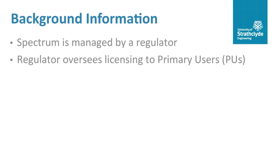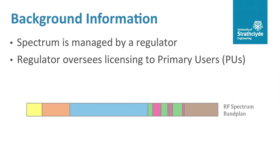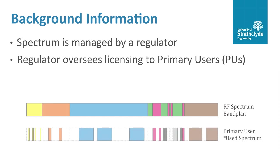In every country the radio spectrum is managed by a spectrum regulator who oversees the allocation and licensing of frequency channels to primary users such as cell operators and TV broadcasters. Traditional allocation policies commonly see large bands of spectrum allocated for a particular type of use across a large geographical area, regardless of whether the primary users — the license holders — are actively using all of the channels in all locations.